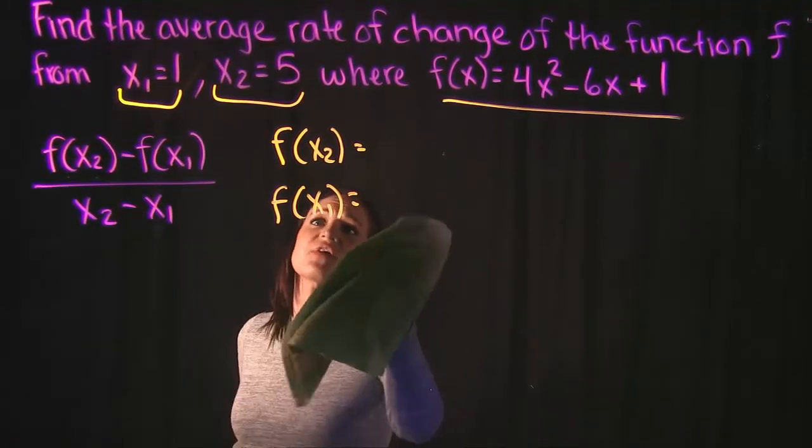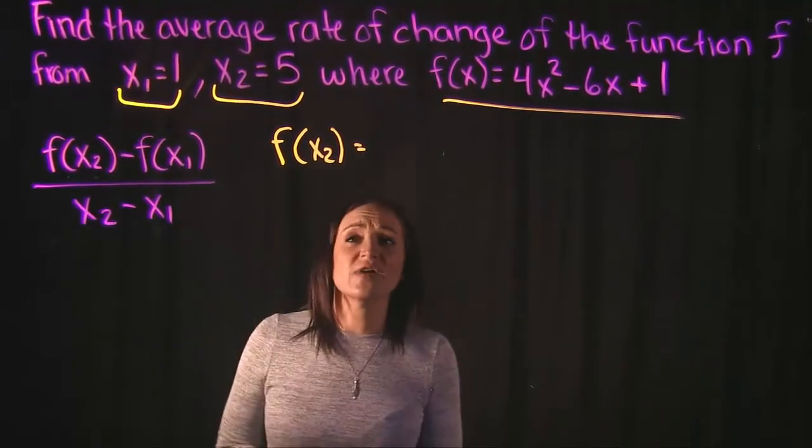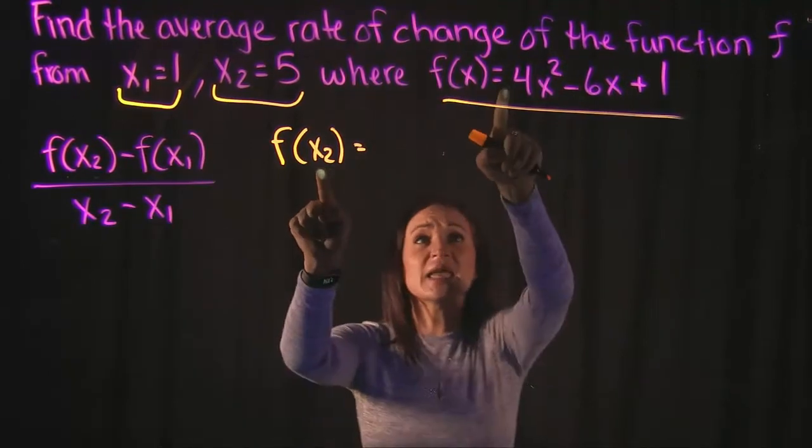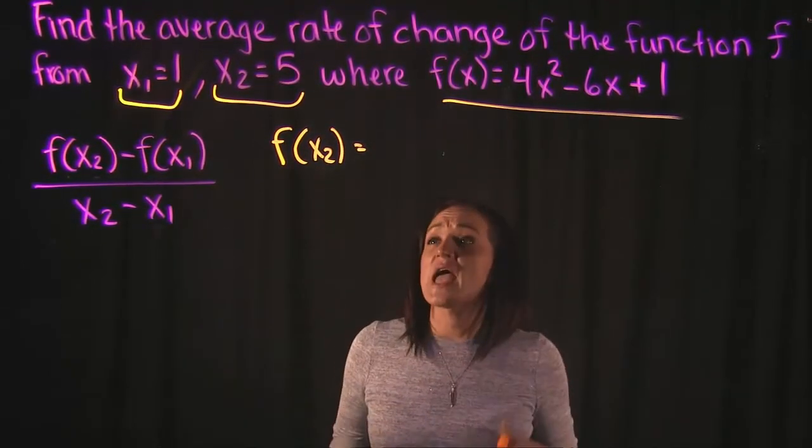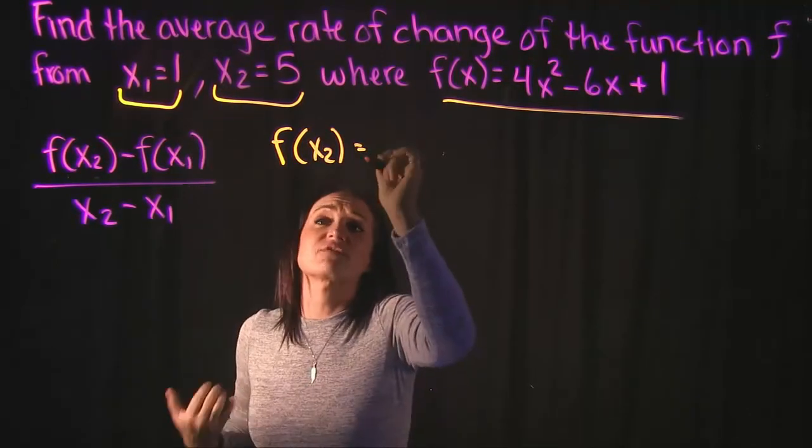So let's focus on finding f(x2) first. So if we're finding f(x2), that means that we're taking x2, plugging it in for x for our function and simplifying. So x2 is equal to 5.